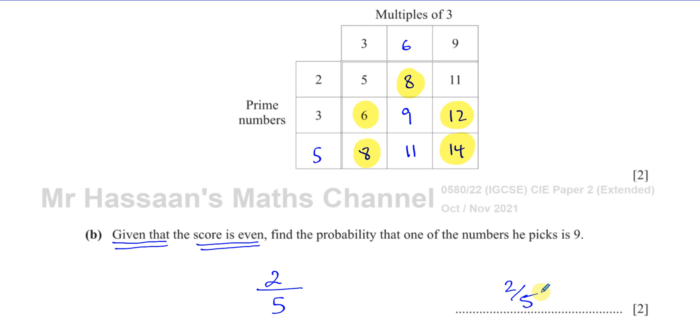The phrase 'given that' is very important here. Without it, the probability would have been 2 out of 9. But because we're only considering the even outcomes, we do 2 out of 5. We are only taking the outcomes which end up as even, which are 5 outcomes altogether. When you see 'given that the score is even,' you restrict the sample to those outcomes. That's a very important point, and that concludes this question on probability.